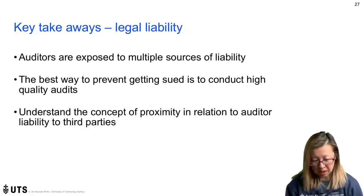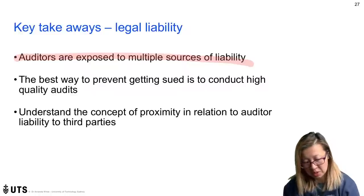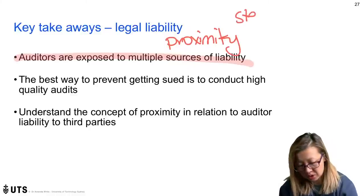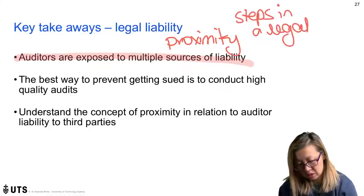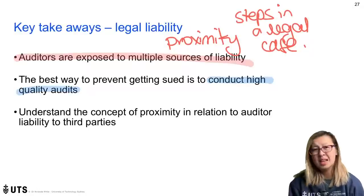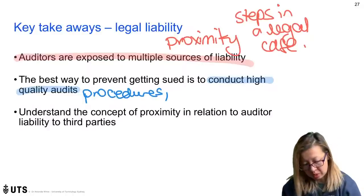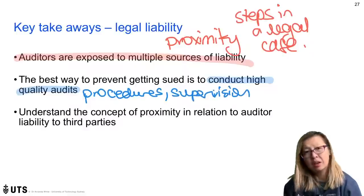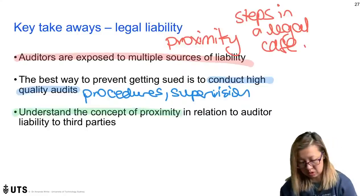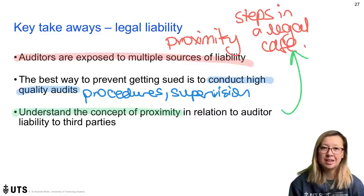The key takeaways from legal liability are: auditors are exposed to multiple sources of legal liability, and we need to understand the concept of proximity and the steps in a legal case. The best way to prevent being sued is to conduct high-quality audits — that means proper audit procedures, supervision of staff, following the auditing standards, and understanding the concept of proximity. That's it for legal liability. If you're ready to move on, just scroll down to the next video and click play.